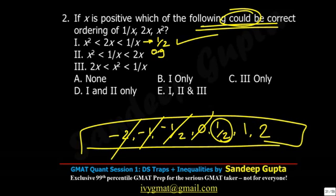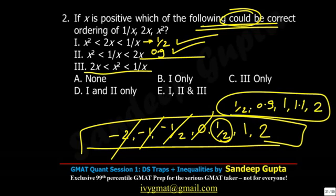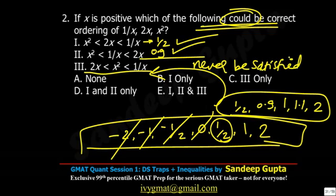0.9 squared is 0.81, 1/0.9 is around 1.1, and 0.9 times 2 is 1.8. So 0.81 is less than 1.1 and less than 1.8. Yes or no? So this is satisfied. Try this for 1/2, 0.9, 1.1, and 2. If it is satisfied by even one number it's okay. If it is not satisfied, this will never be satisfied.